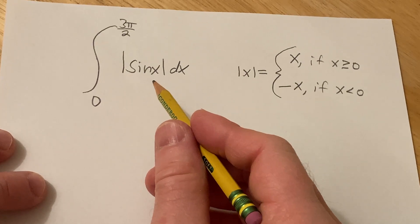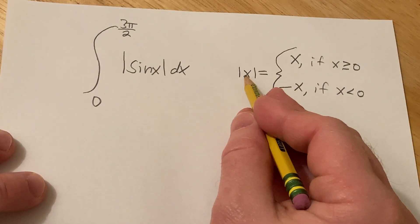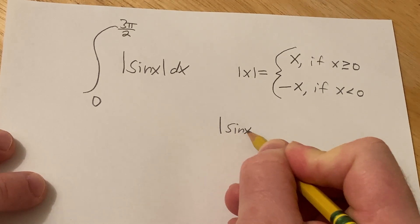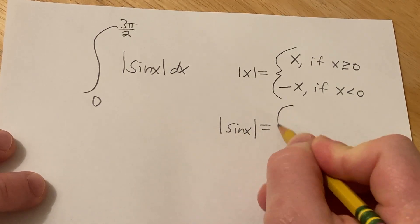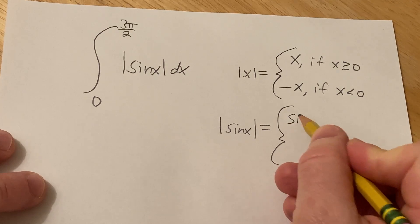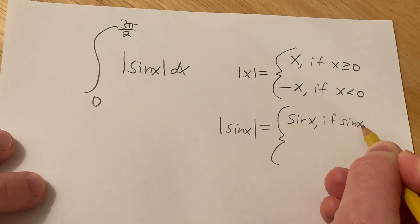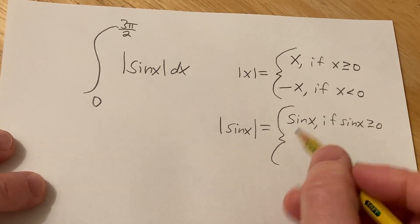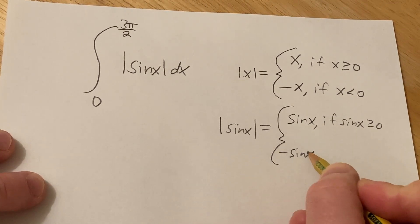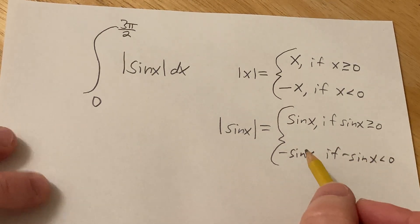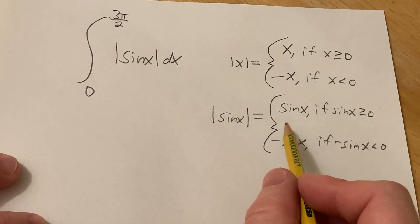In this case, though, it's not x, it's the sine of x. So if we just replace this formula with sine x, we get the following. We get sine x is equal to this, and that's going to be true if sine x is greater than or equal to 0. And then here you would get minus sine x if sine x is less than 0.